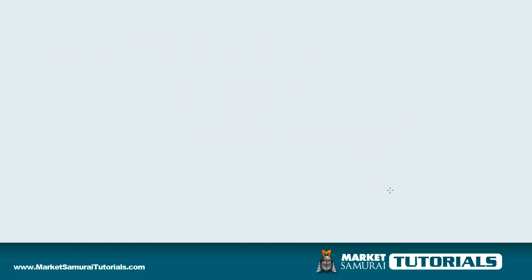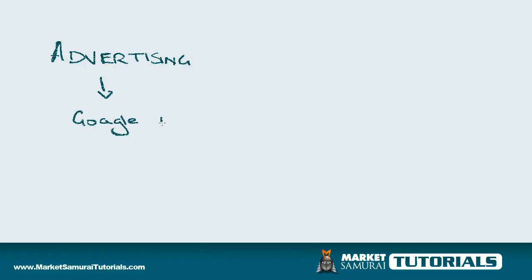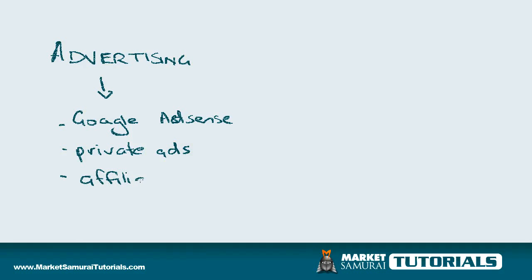The first method is you can put advertising on the website. Advertising is a very common way to make money immediately — for example, Google Advertising through Google AdSense. Or you can do private advertising, or potentially put up affiliate banners, which also allows you to generate income. Those are the three main ways to generate income from advertising. This can be very volatile and uncertain at the beginning because you don't know how much it's going to be coming through.